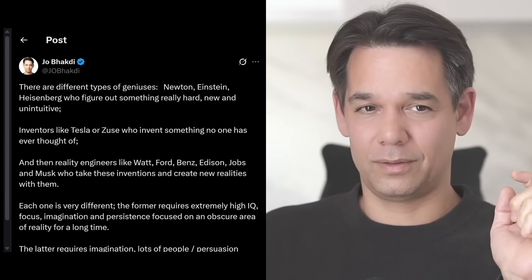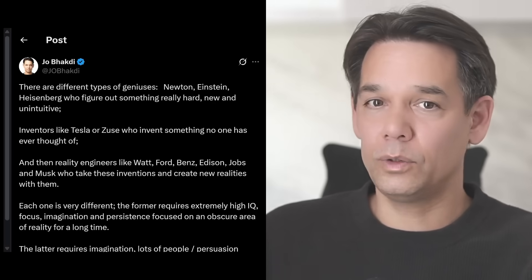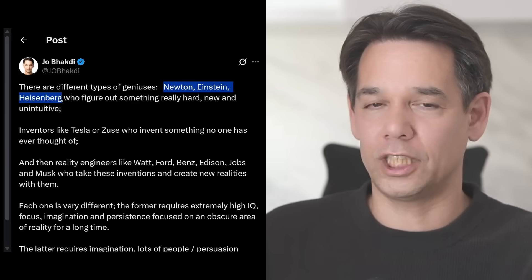The second type of genius and second type of problem are inventors, technical geniuses. Because Newton, Einstein, Heisenberg, they're all not technical geniuses. They didn't invent machines or nuclear bombs.